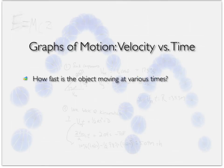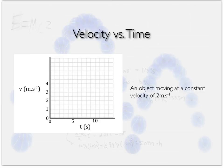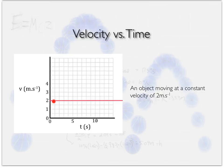Now for velocity-time graphs — these are by far the most important and most commonly tested. They tell us how fast an object is moving at various times. Most of them are straight lines, which makes them easier. The first one: sketch an object moving at a constant velocity of two meters per second. The graph is simply a horizontal line — velocity stays constantly at two meters per second at every second. That is as simple as this gets.